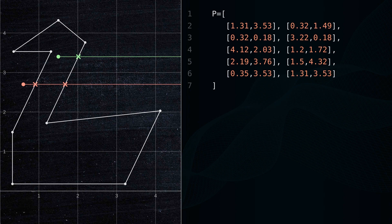If the number of intersections is even, the point is outside the polygon. If the number of intersections is odd, the point is inside the polygon.